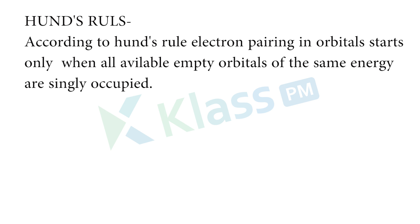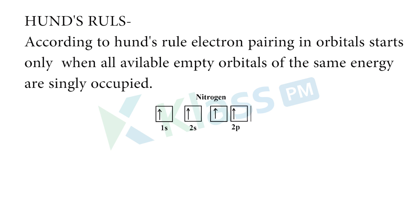Then coming to Hund's rule. According to Hund's rule, electron pairing in orbitals starts only when all available empty orbitals of the same energy are singly occupied. So the pairing will happen only when all available empty orbitals of the same subshell or same shell are singly occupied.